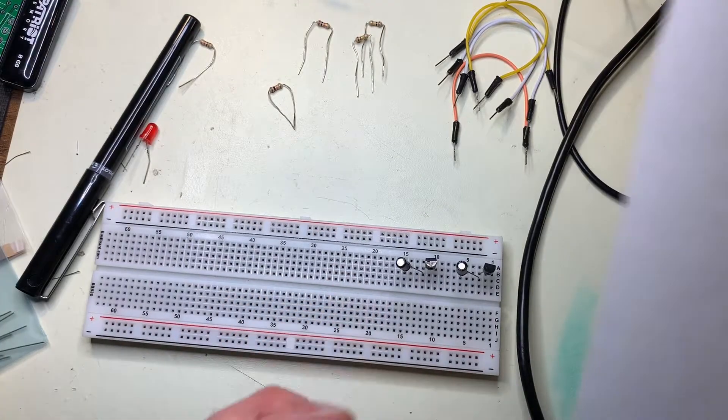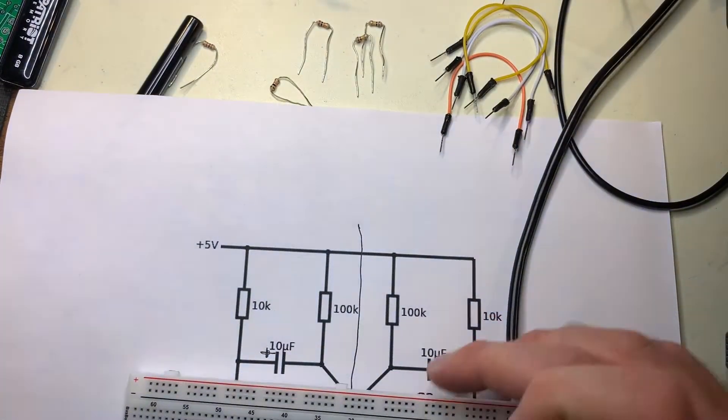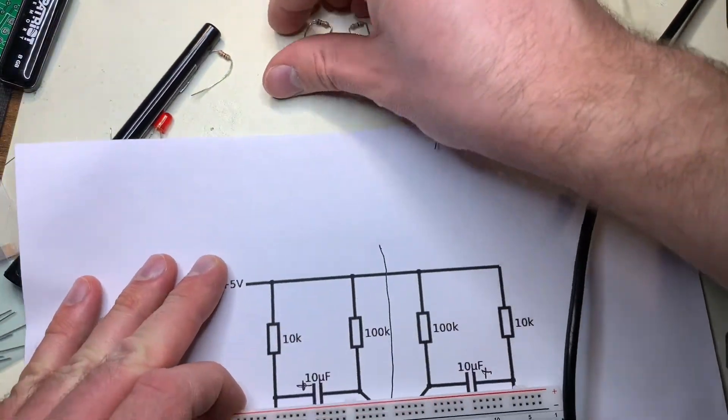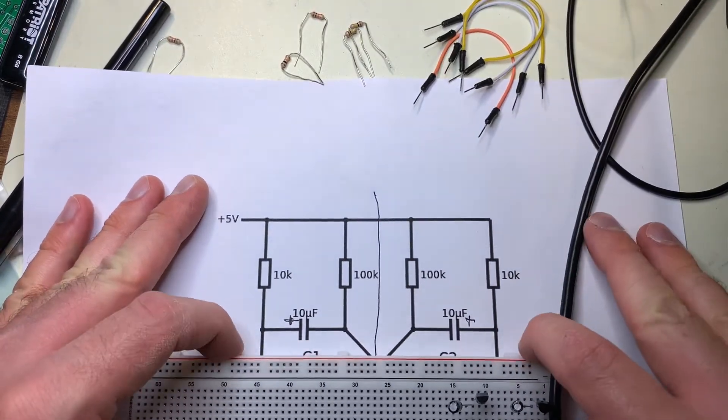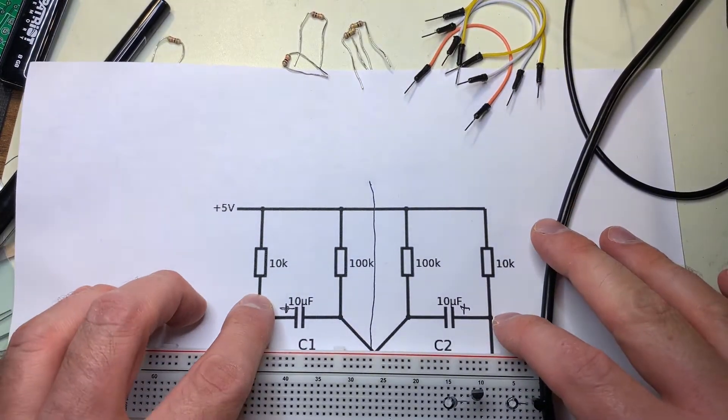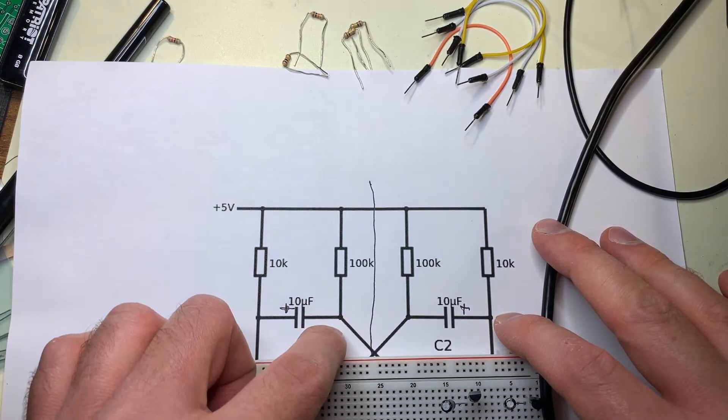Next we can put in the resistors, and it might seem a little bit more complicated, but we can just follow the schematic, and it will tell us exactly where these resistors need to go. So you can see here that we have the 10k resistor on the positive side of the capacitor, and the 100k on the negative side of the capacitor.